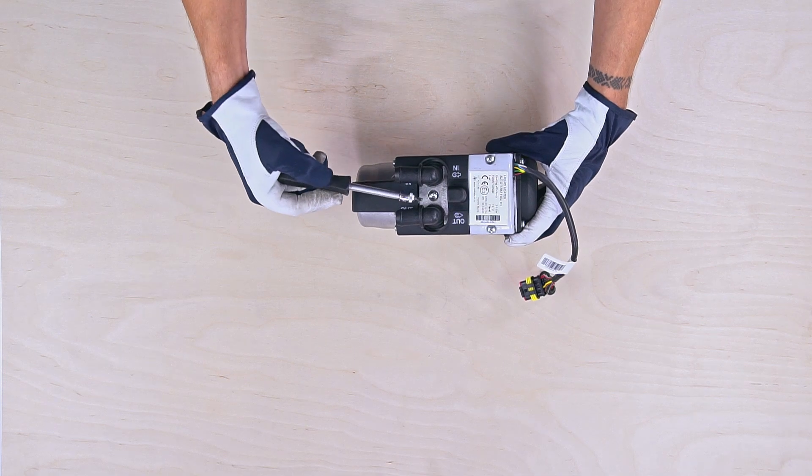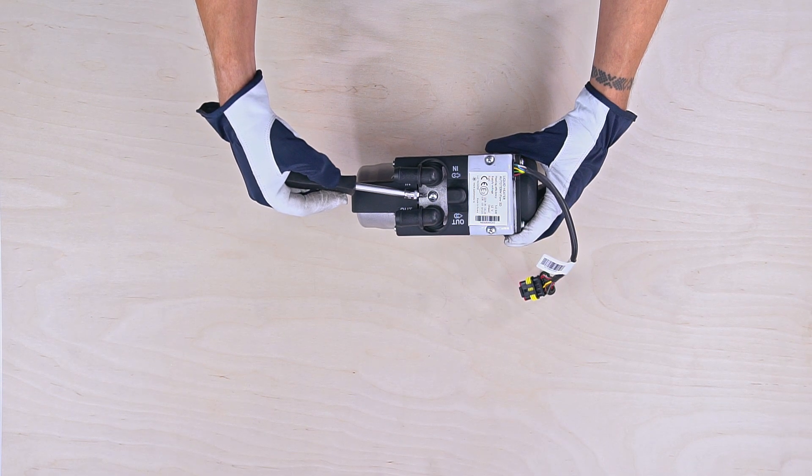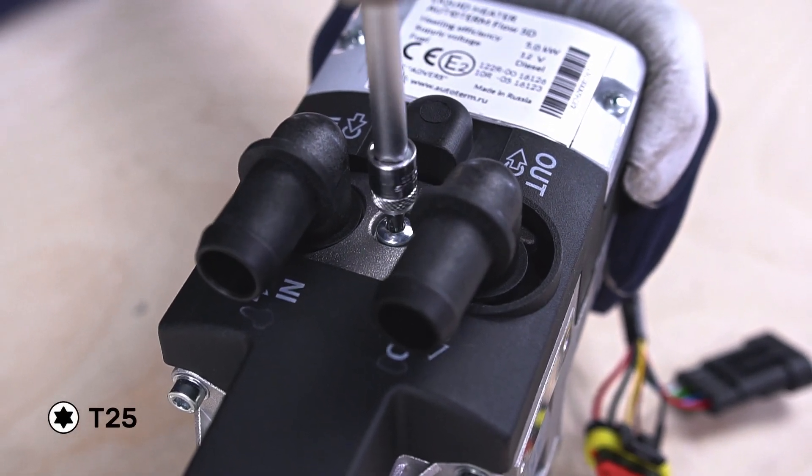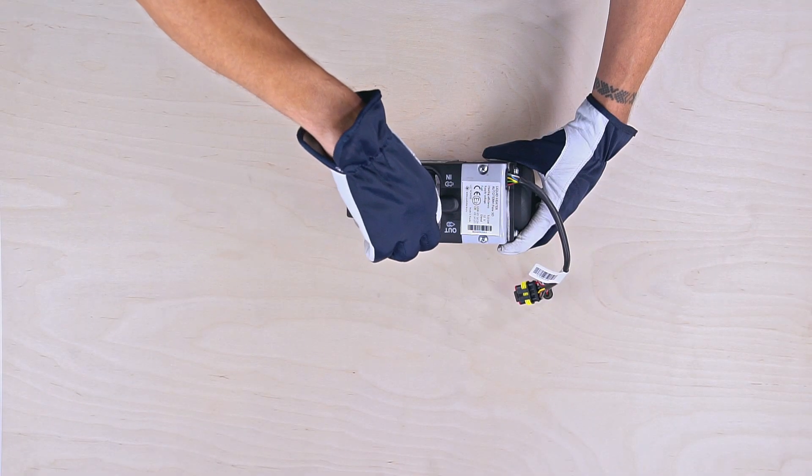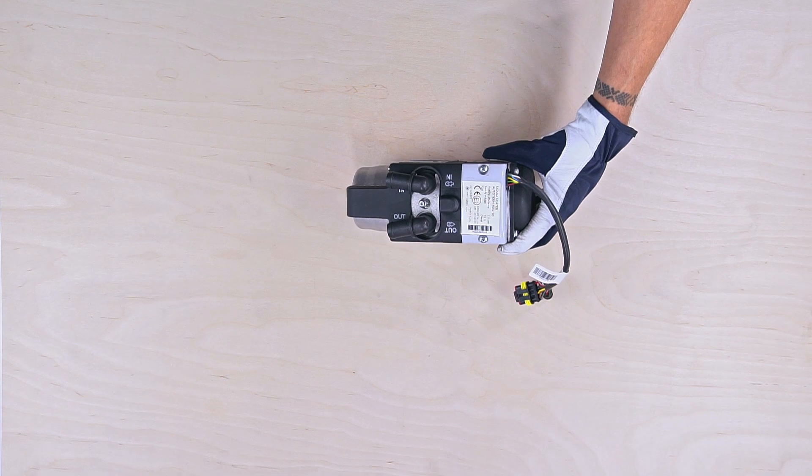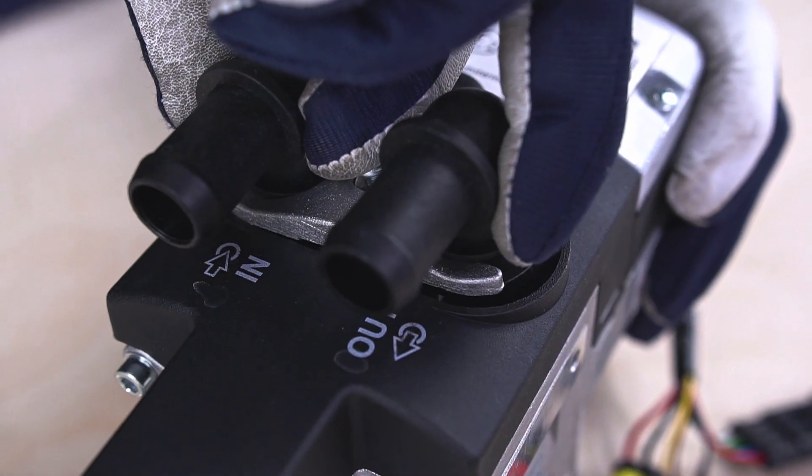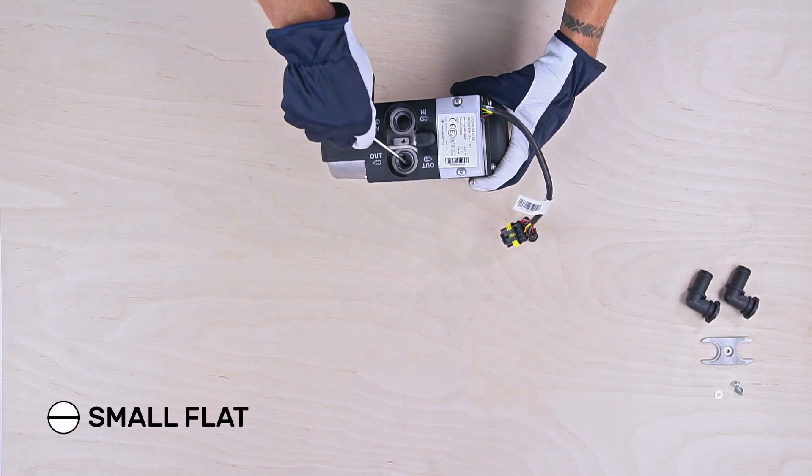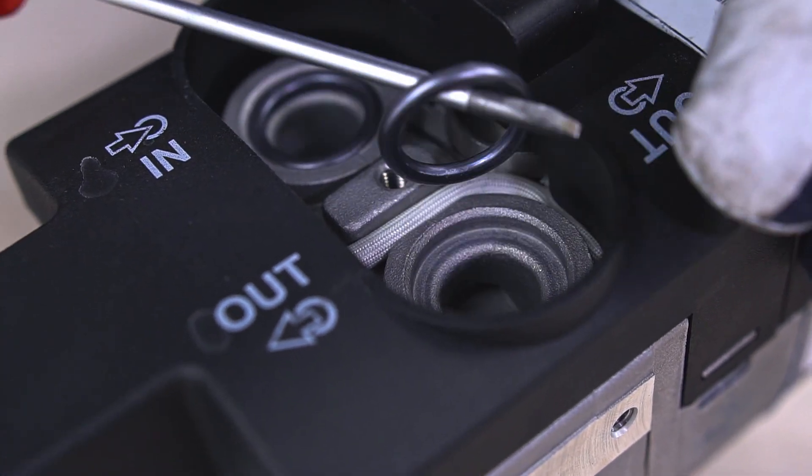First we are going to remove the coolant input output elbows. Using the Torx T25 key, unscrew the bolt between both coolant elbows. Take both coolant elbows off. With a small flat end screwdriver, remove both sealing o-rings.